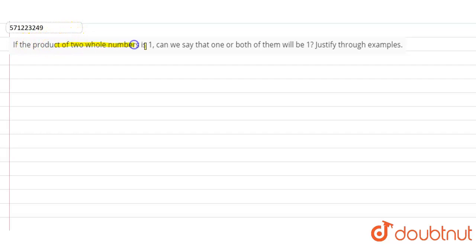...can we say that one or both of them will be one? Justify through examples. Firstly, whole numbers are the positive numbers starting from zero to infinity.